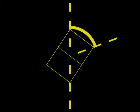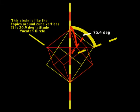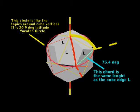Now we'll take a copy of the yellow cube and turn it into a red, and then rotate it 75.4 on the red and yellow axes. This angle is bigger than the 70 because it rotates around a smaller circle. This circle is 20.9 latitude, the same as Yucatan.